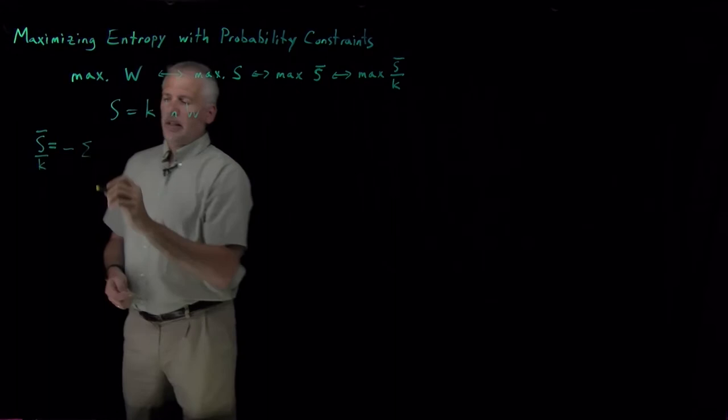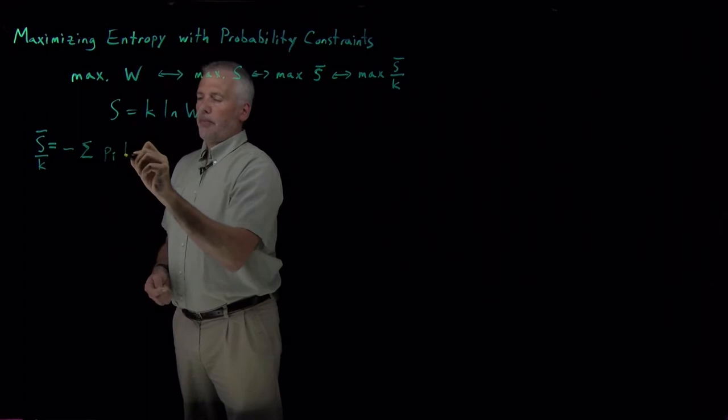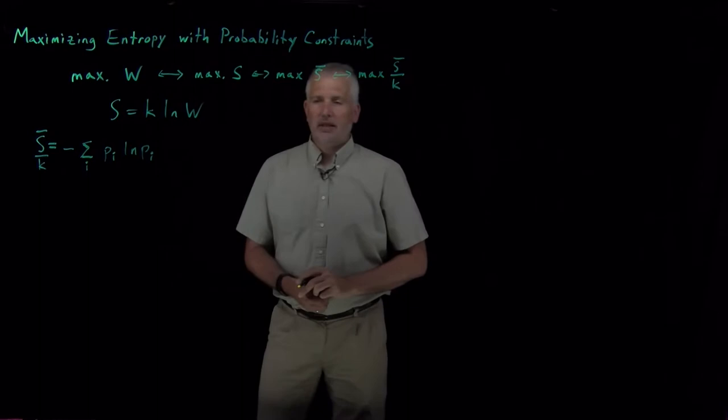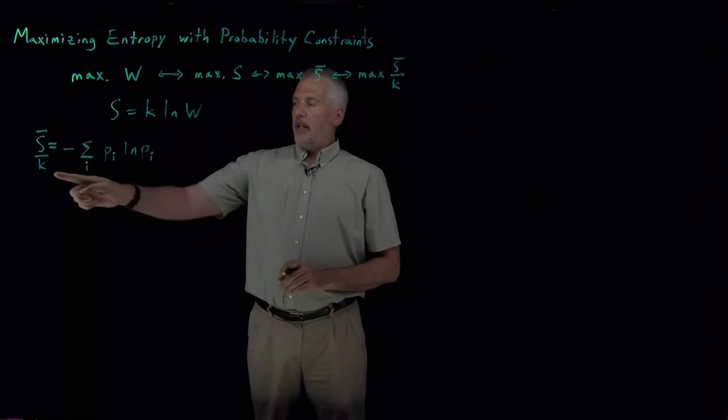So if I sum up P log P, probability times the log of probability for every different state the system can exist in, every different conformation, every different energy level, whatever the states are that we're talking about, then that's the thing I want to maximize, negative sum of these P log P's.